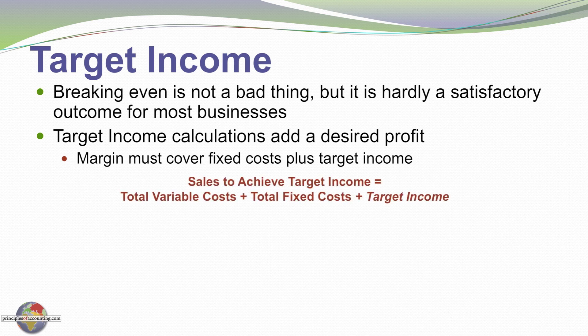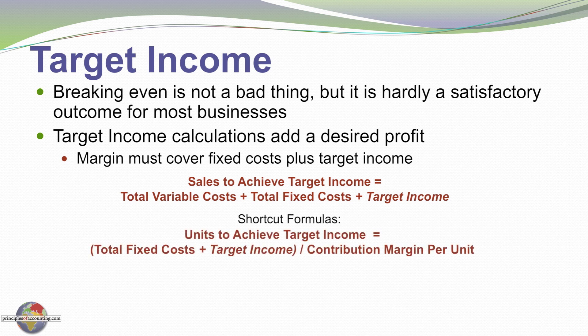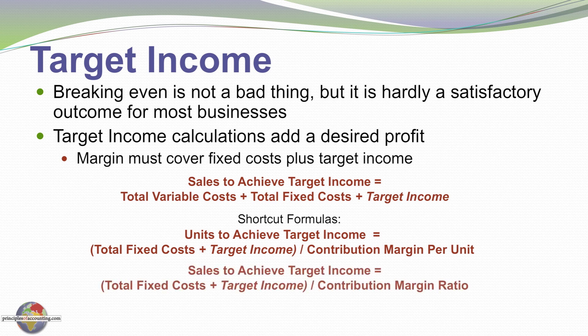Algebraically, sales to achieve a target income would be equal to our total variable costs, our total fixed costs, and our target income level. There are several shortcut formulas that can be applied for these calculations. The units to achieve a target income level would be our total fixed cost plus our target income divided by the contribution margin per unit. And the sales to achieve a target income level would be our total fixed cost plus our target income divided by the contribution margin ratio.